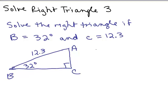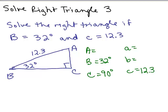We need to find A, B, and C the angles and a, b, and c the sides. Let's fill in what we know already. We're given that angle B is 32 degrees, and we know C is the right angle, so that's 90 degrees. We also know that side c is 12.3. So we need to find two sides, side a and b, and we need to find angle A.